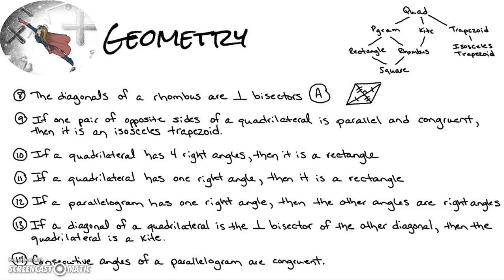Number nine: if one pair of opposite sides of a quadrilateral is both parallel and congruent, then it is an isosceles trapezoid. That would never be true, because having one pair of opposite sides that is both parallel and congruent is one of the five ways to prove that something is a parallelogram — and a parallelogram is never an isosceles trapezoid.